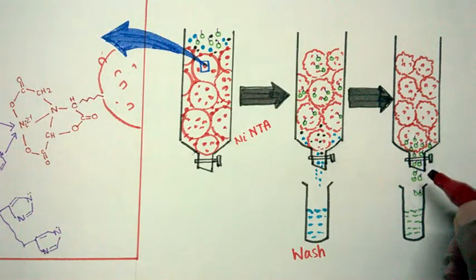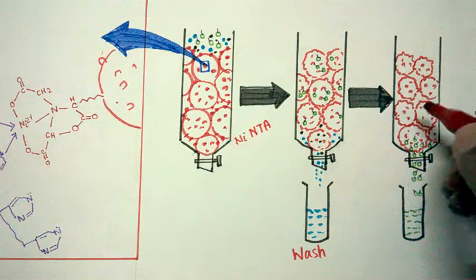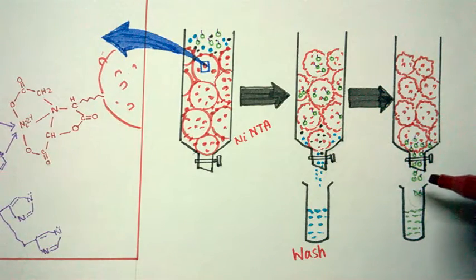And then when we use our elution buffer, that's the elution step. So elution buffer would elute our protein of interest. Now in big details let's see how the elution buffer actually elutes our protein of interest.